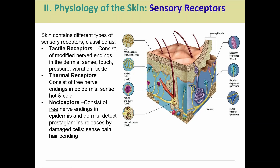Thermal receptors are free nerve endings for temperature as well as pain — hot and cold. They also serve a dual purpose as nociceptors, where we detect pain. Basically, they detect the prostaglandins that get released when a cell is damaged. So if you get a cut, those damaged cells release prostaglandins, which are then sensed by these free nerve endings.